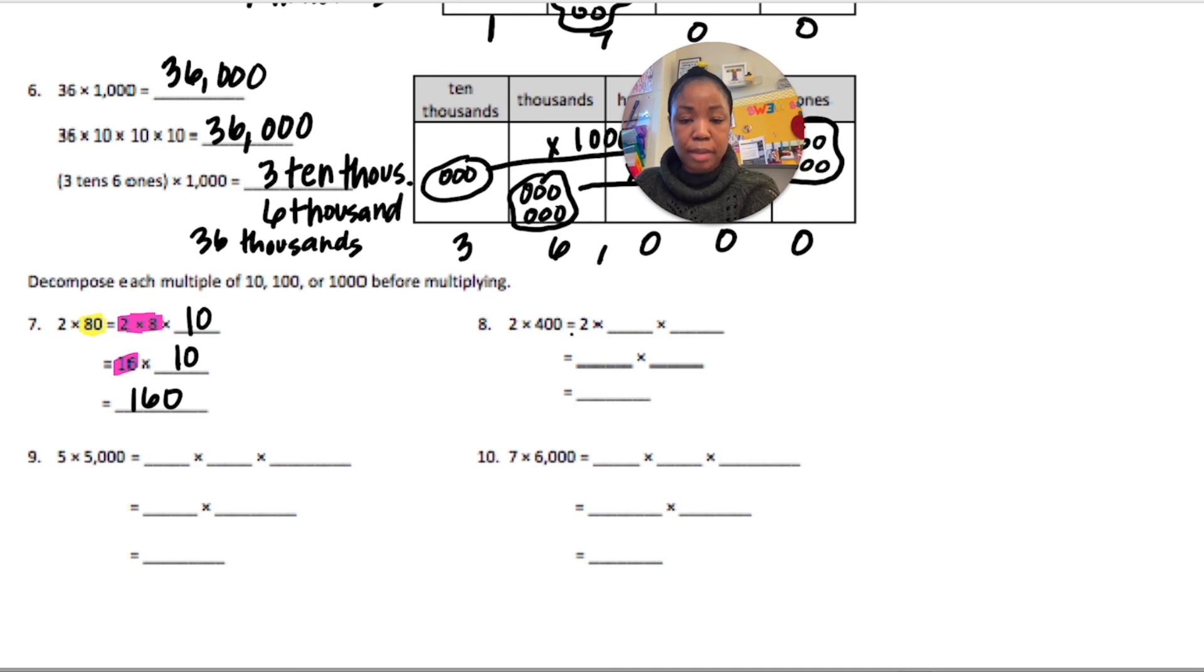For number 8, 2 times 400. That's 2 times 4 times 100. 2 times 4 is 8 times 100. 8 times 100 is 800. For number 9, we have 5 times 5,000. That's 5 times 5 times 1,000. 5 times 5 is 25 times 1,000 is 25,000.